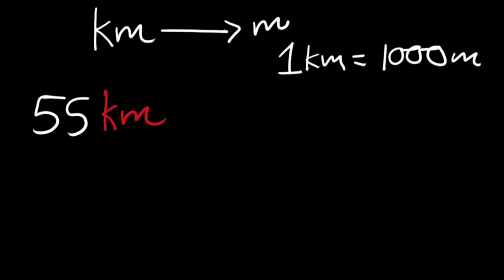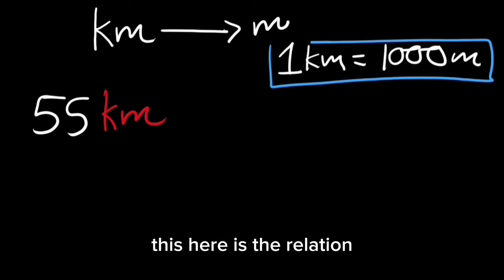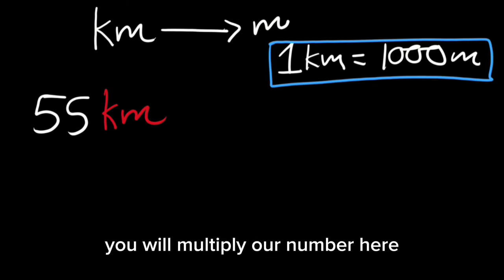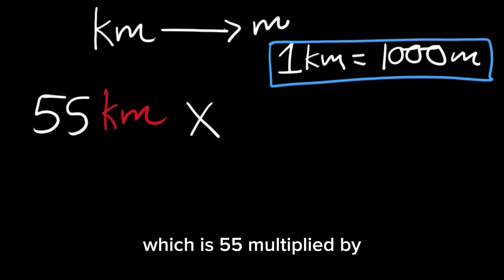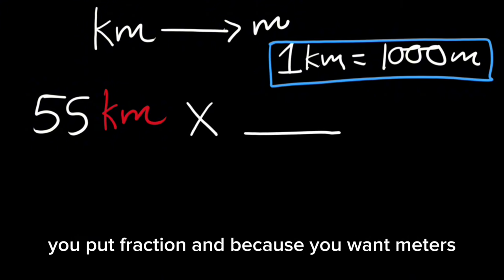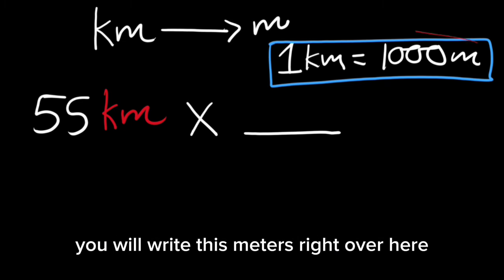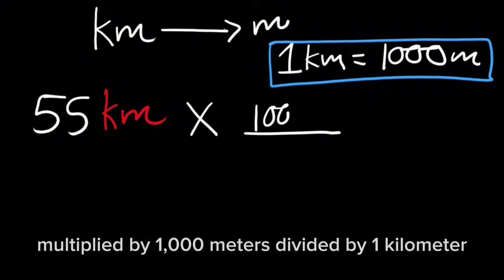You will multiply our number, which is 55, by a fraction. Because you want meters, you will write meters on top. So you'll have 55 multiplied by 1,000 meters divided by 1 kilometer.